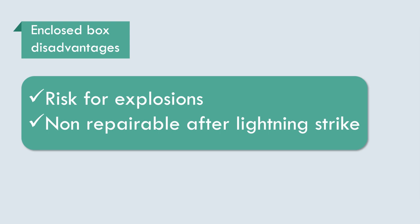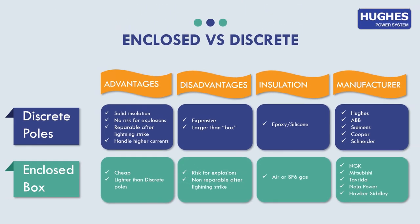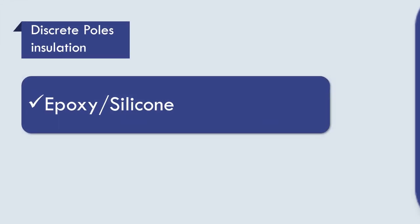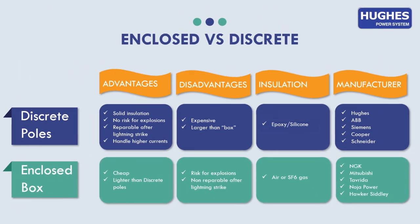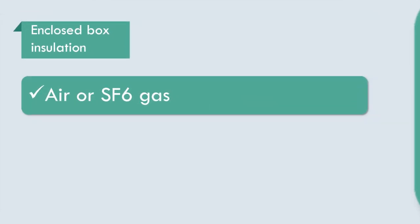Third parameter is insulation. For discrete poles, it is epoxy or silicone, which gives excellent protection against UV radiation or installation faults. For enclosed box, it is air or SF6 gas, which has a risk of gas leakage and is harmful for the environment.